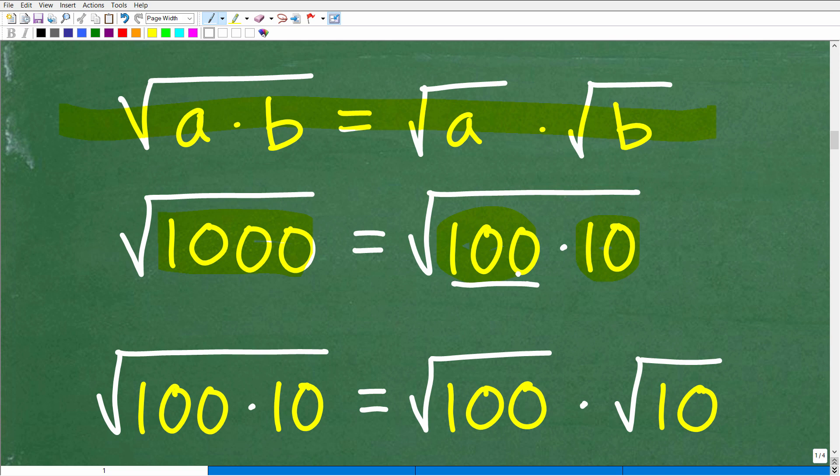So 100 is a nice, big, perfect square factor because the square root of 100, hopefully, you know, is 10. Okay, so 10 times 10 is 100. But the main idea here is that we can write 1,000 as the product of these two factors, 100 times 10.